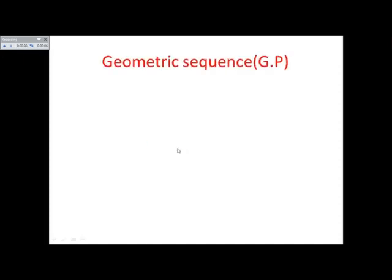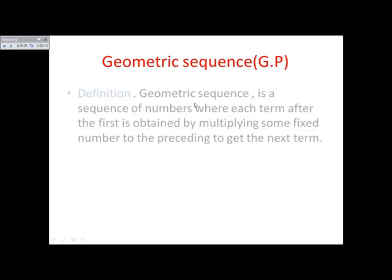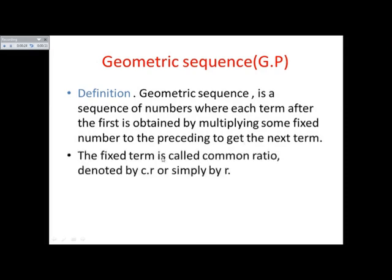Dear students, our today's topic is geometric sequence or geometric progression, from the first year book of mathematics, chapter number four. A geometric sequence is a sequence of numbers where each term after the first is obtained by multiplying some fixed number to the preceding term to get the next term. The fixed number is called the common ratio, denoted by r.